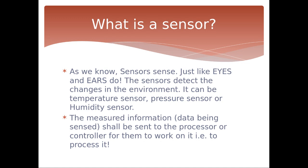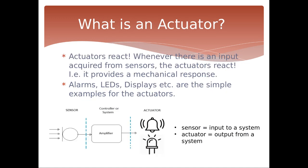Now let's talk about the actuator. What is an actuator? An actuator reacts. Whenever there is an input acquired from the sensor, the actuator reacts — it provides a mechanical response. An alarm, LED, display — anything in front of you that lets you know something has happened is called an actuator. The sensor gives input to the system, and after processing, if there is something alarming or an indication to be sent to the people involved in that activity, the actuator can raise an alarm, blink, or flicker.